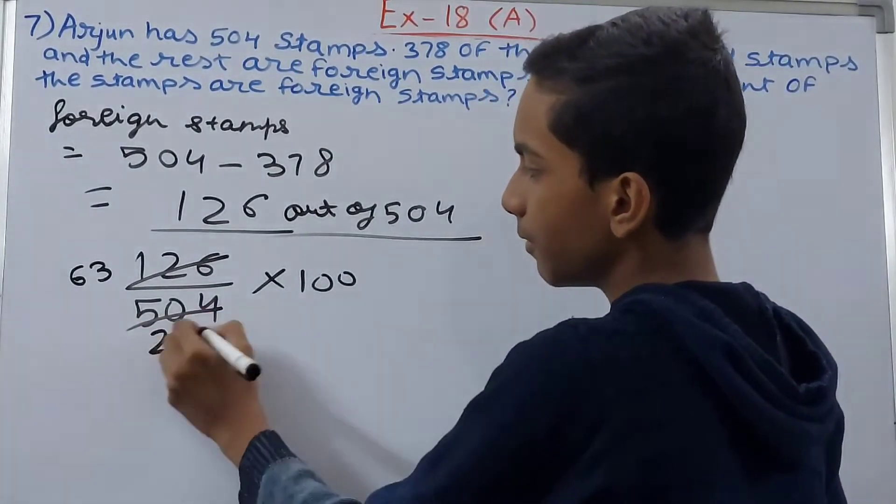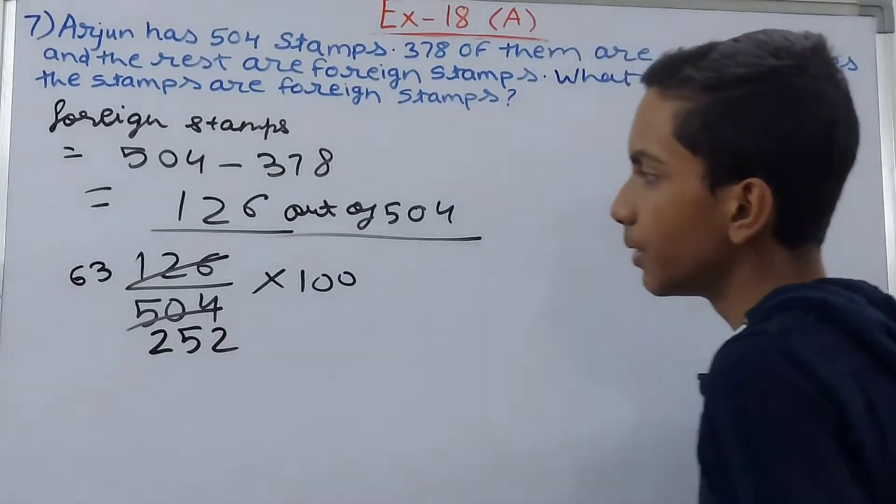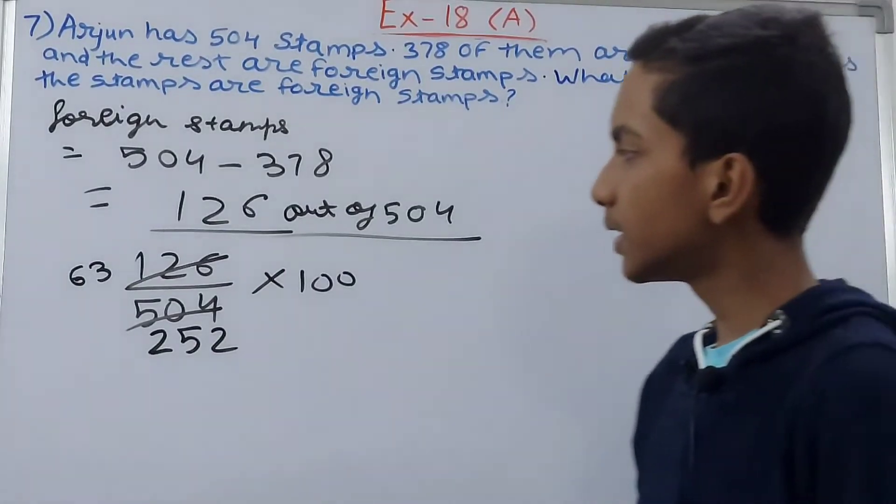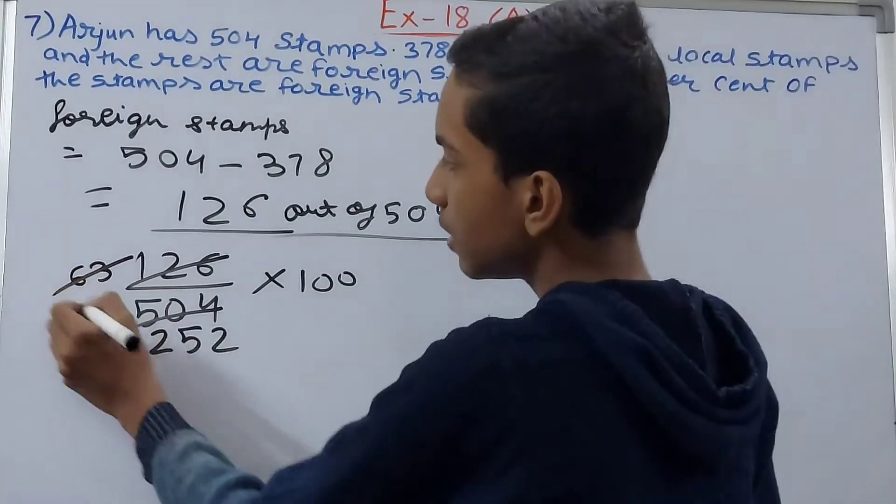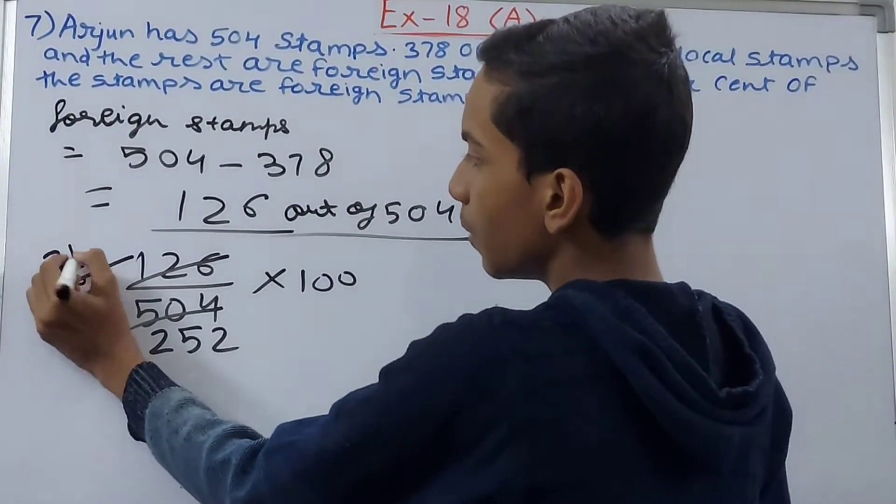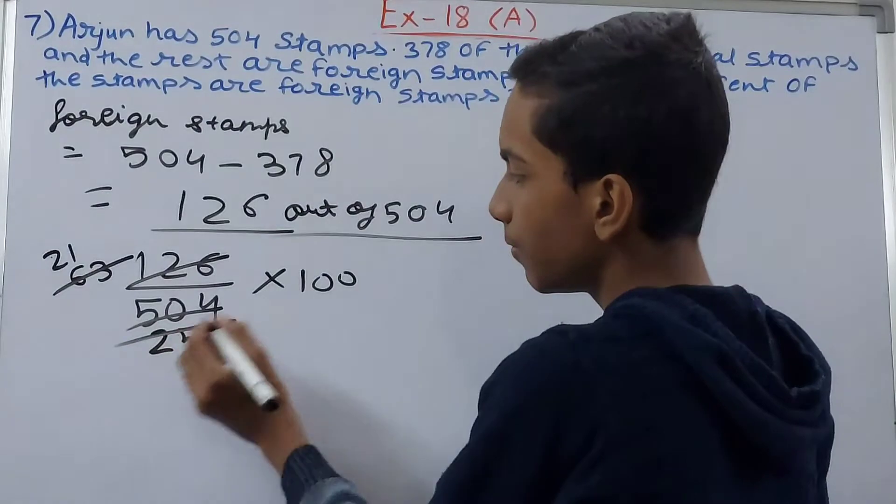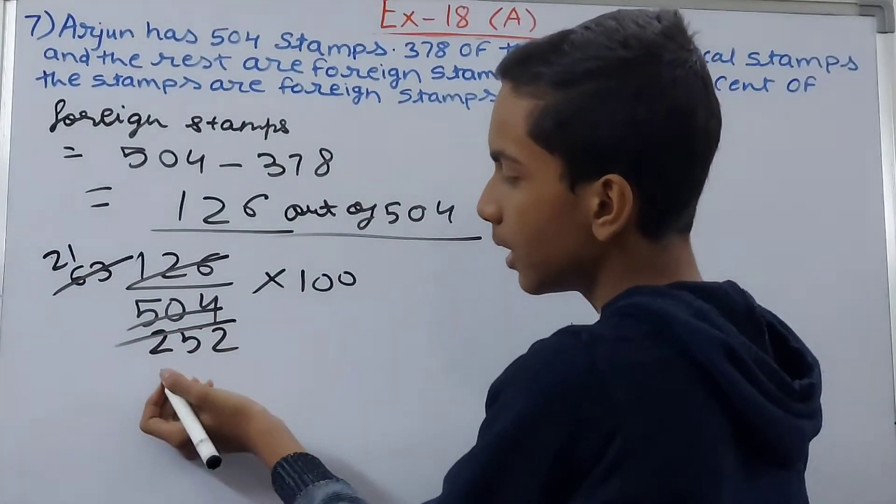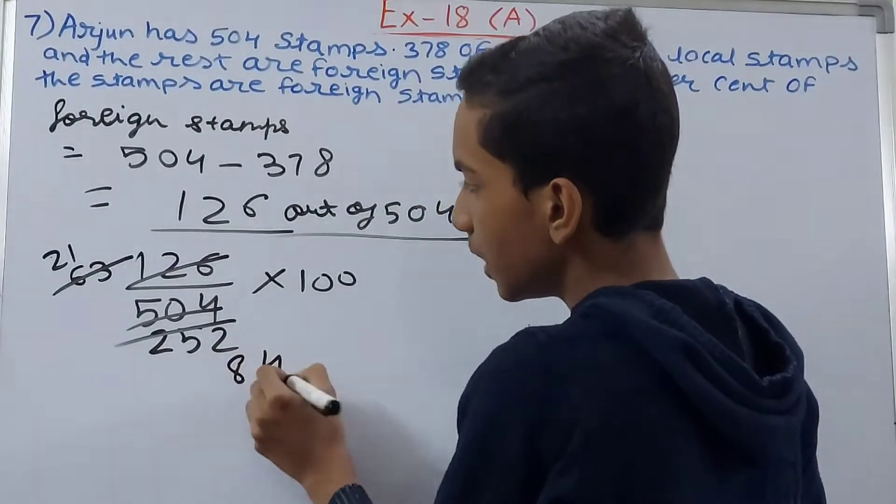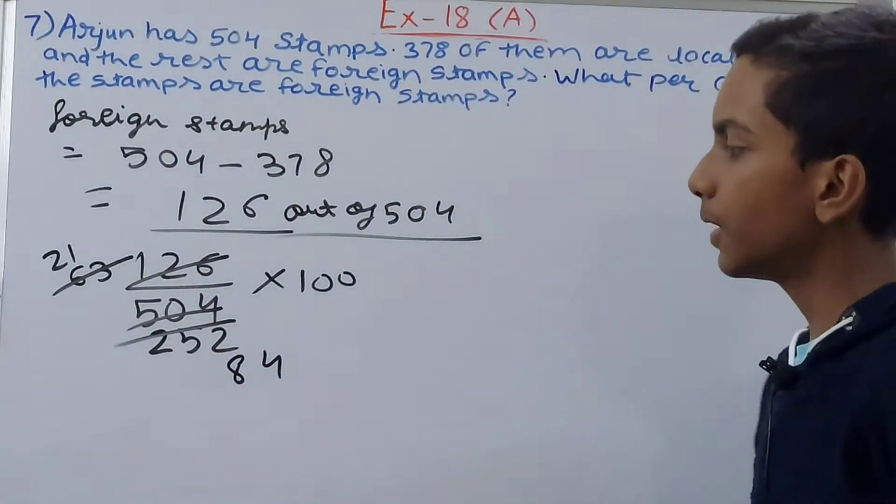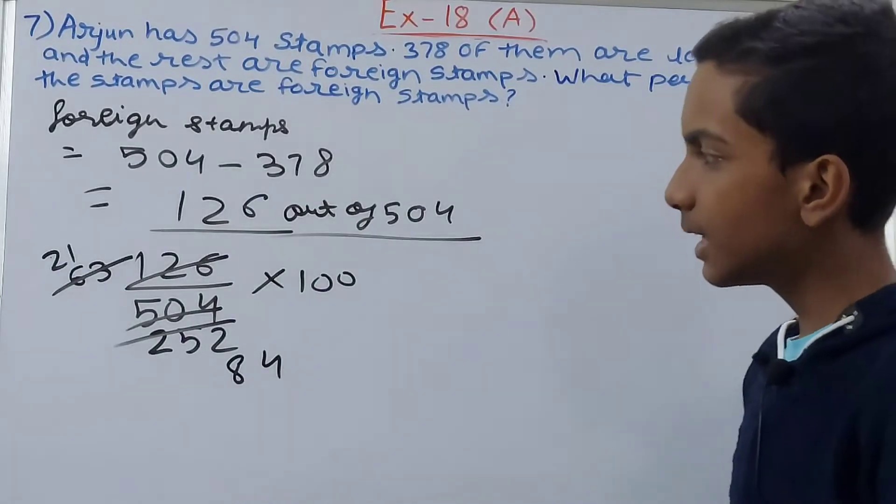By 3: 63 goes 21 times, and 252 goes 84 times. Now 21 and 84, let's cancel by 7: 21 goes 3 times, 84 goes 12 times. Again, cancel by 3, so we get 1 and 4.